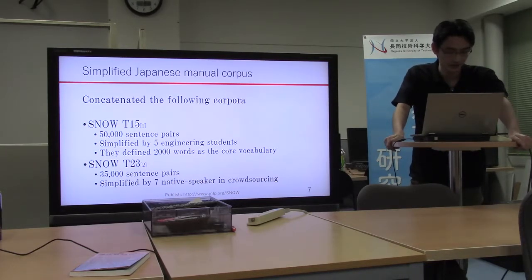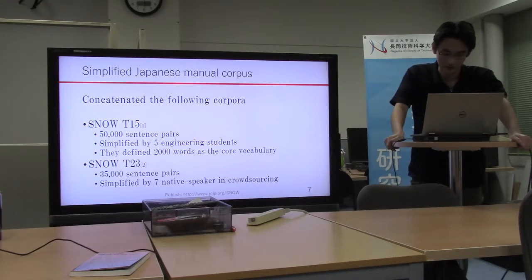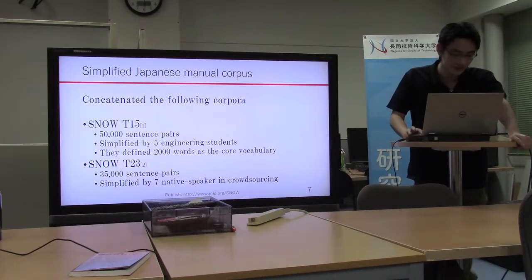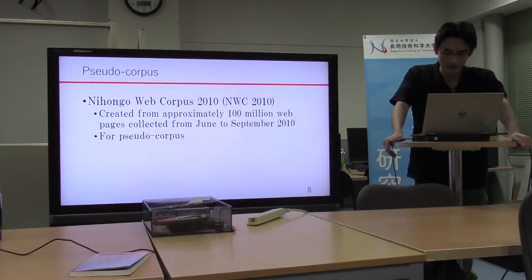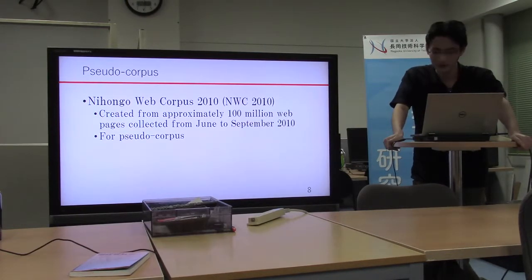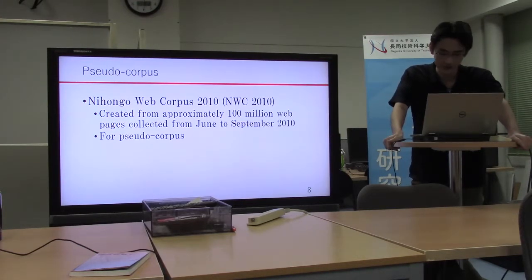Snow Tea 22243 is a corpus built by requesting the same operation using crowd sourcing. We also used the Nihon Web Corpus as a pseudo corpus. NWC is a large-scale monolingual corpus collected from web pages. We constructed a pseudo corpus using this corpus as a data source.